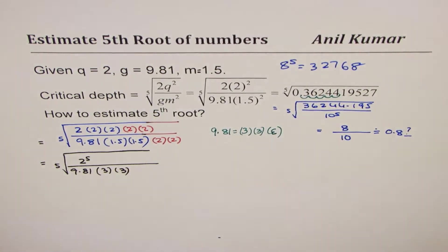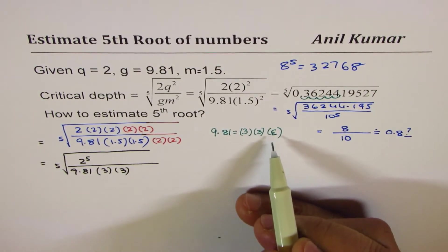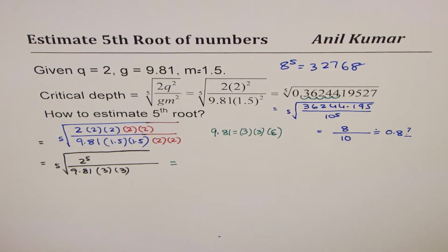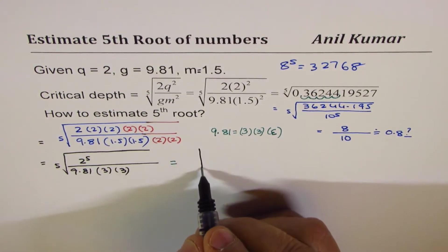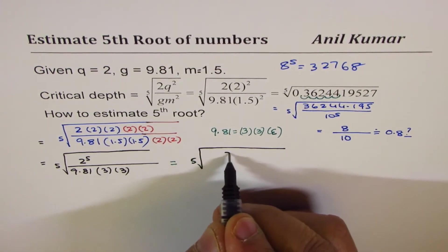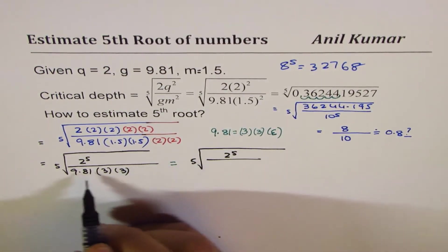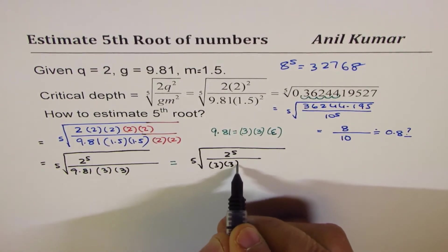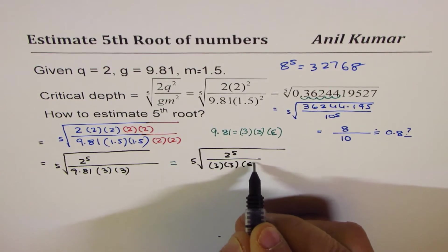Introducing an error is basically an estimate. So I could write this as—I'm showing you the steps, right? Once the steps are clear it's very easy to calculate. So I'm writing 9.81 as 3 times 3 times some error.